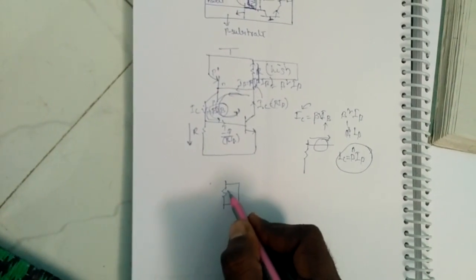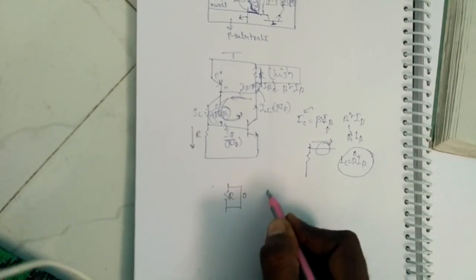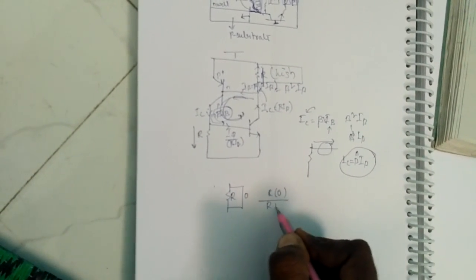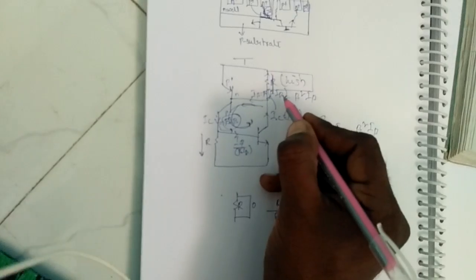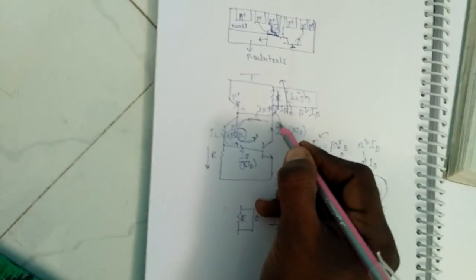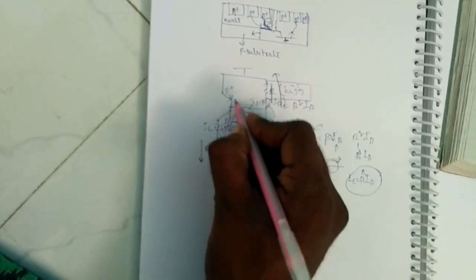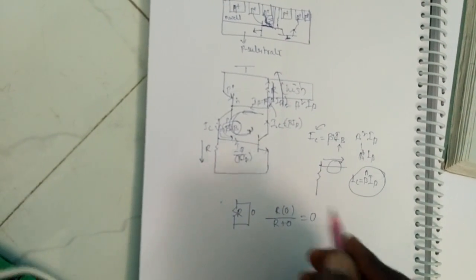What happens? Resistance is there, one short is there. If it is having resistance R and short of 0, R into 0 by R plus 0 is nothing but 0. So current will choose this path also, and it will not damage the transistor.